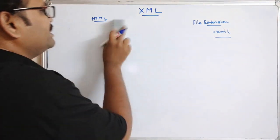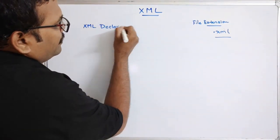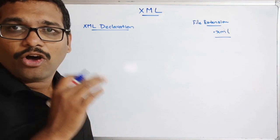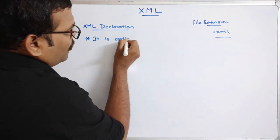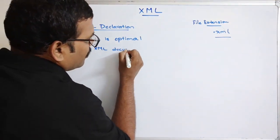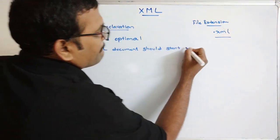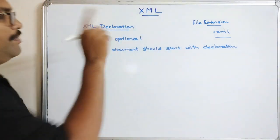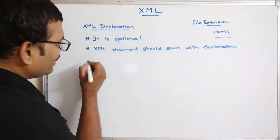The XML declaration is an optional thing. But if you want to declare it, the XML document should start with the declaration as the very first line.